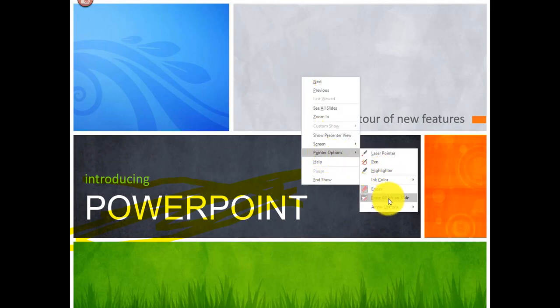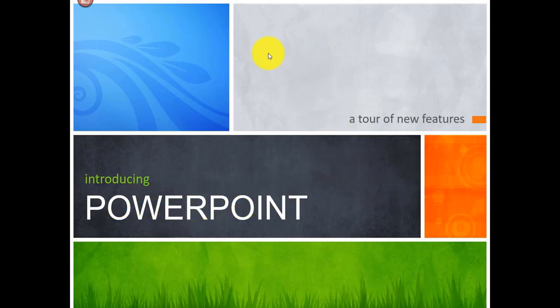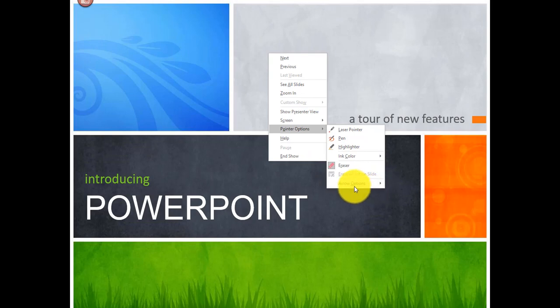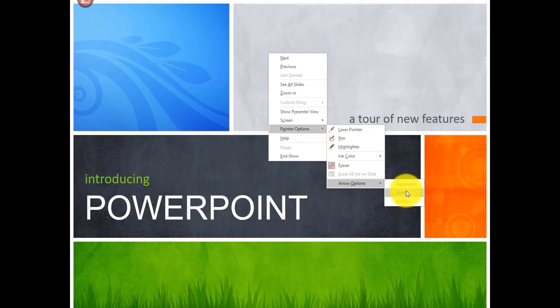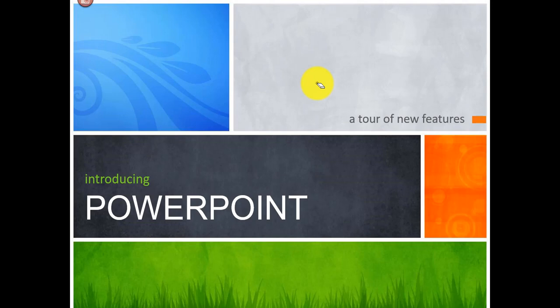You can also select Erase All Ink on the Slide to clear everything at once. Under Arrow Options, if set to Automatic your mouse pointer may disappear. Select Visible to always show it, or Hidden to hide it altogether.